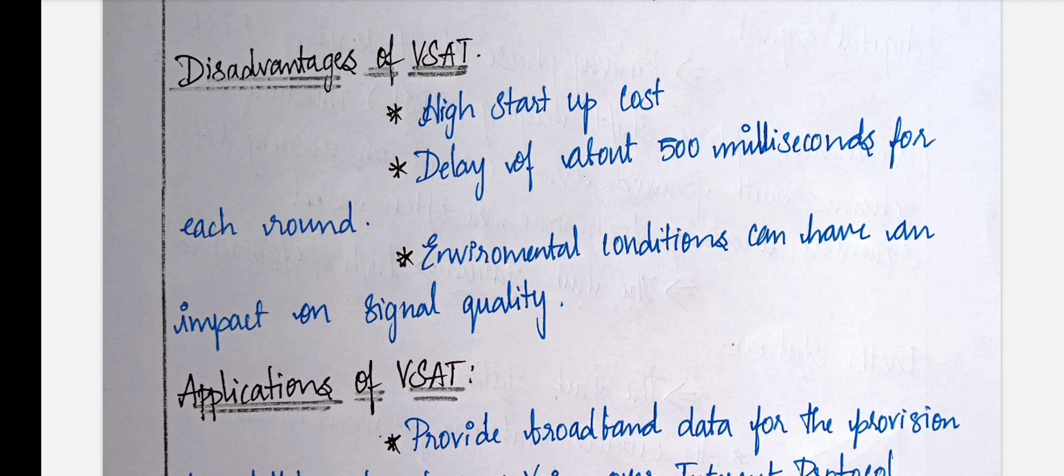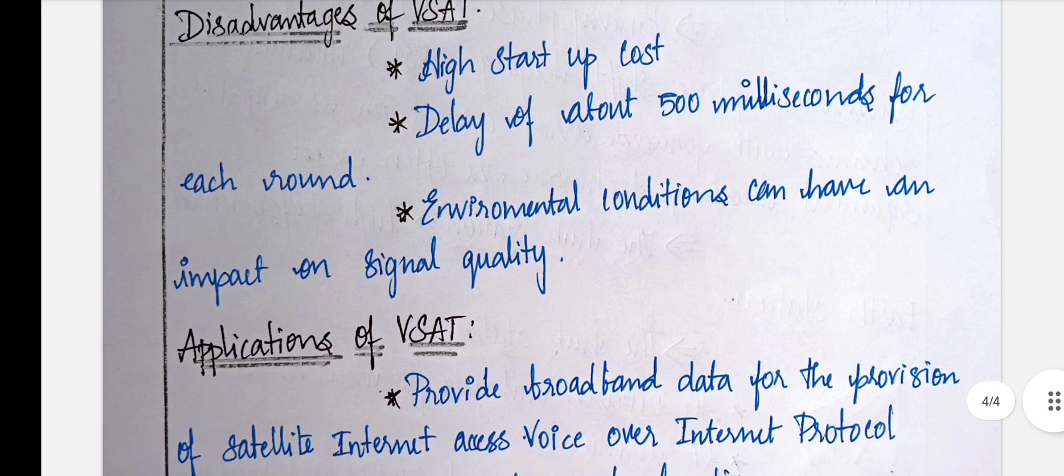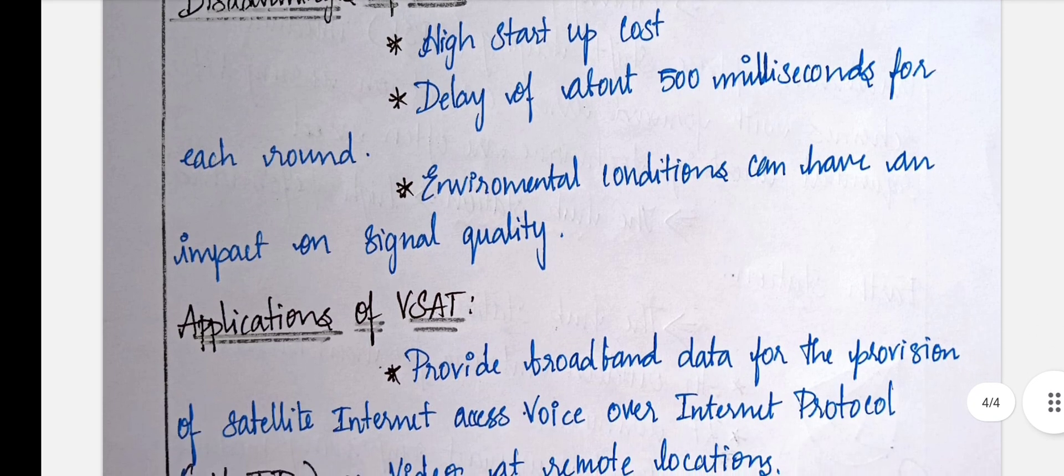The disadvantages are the startup cost is very expensive, and it has a delay of 500 milliseconds because from the geostationary satellite to the earth ground station it delays 500 milliseconds for each round. Environmental conditions can affect the VSAT transmission and reception.